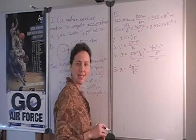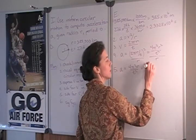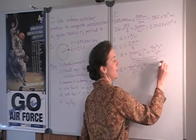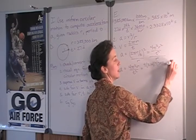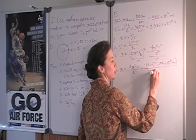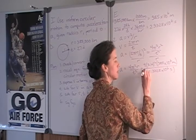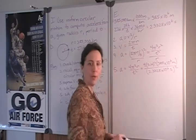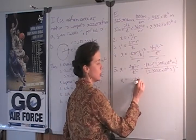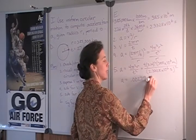Now we're ready to substitute values for the period and the radius. So we have 4 times 3.14 squared times 385 times 10 to the sixth meters for the radius and divided by 2.3328 times 10 to the sixth seconds squared for the period squared. This gives us a value of 0.00279 meters per second squared.